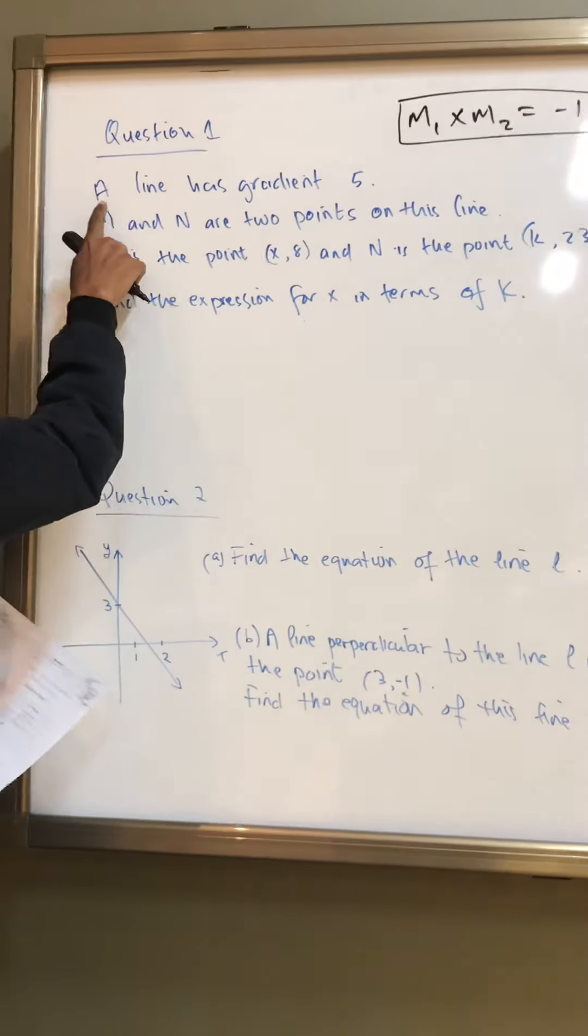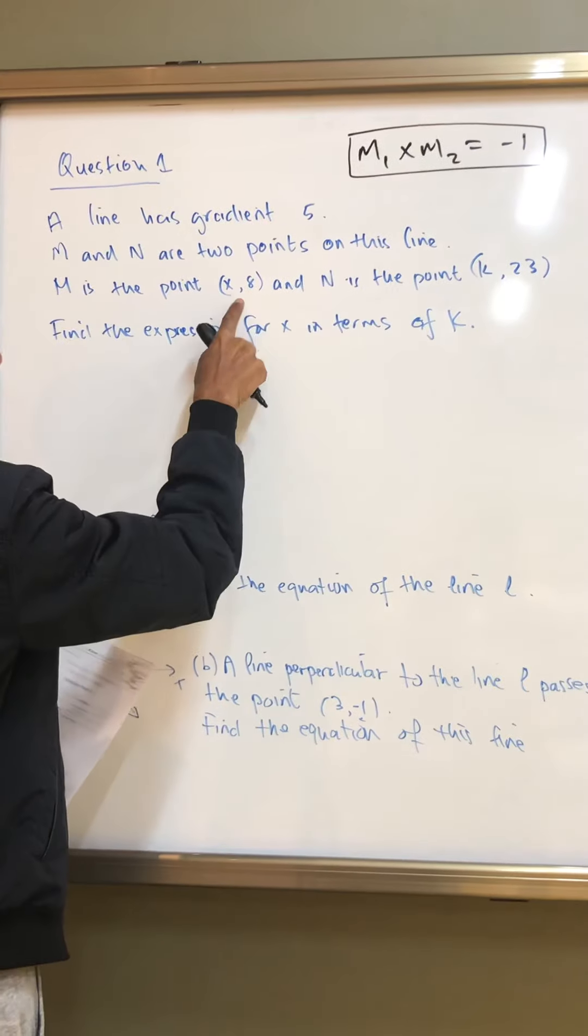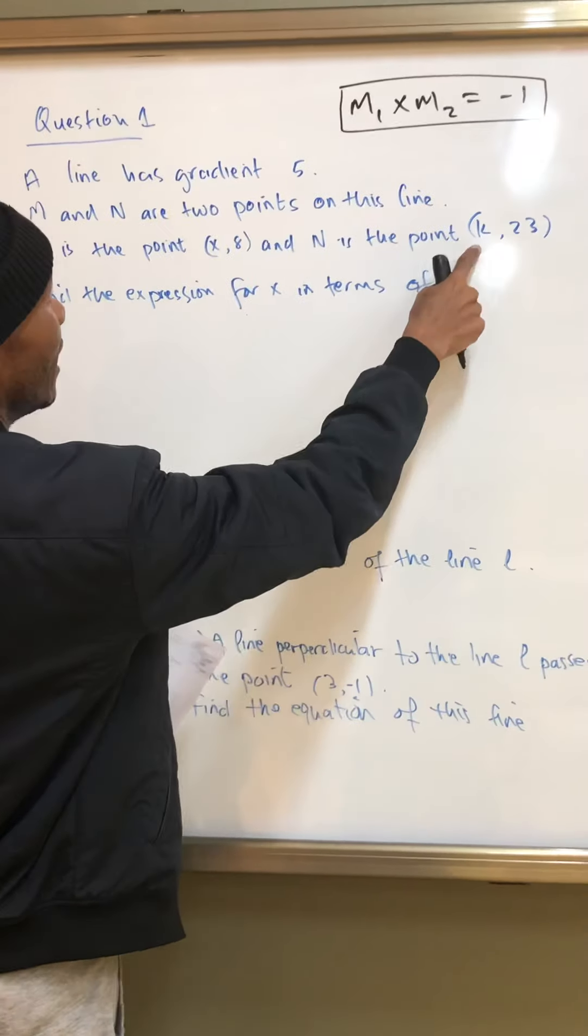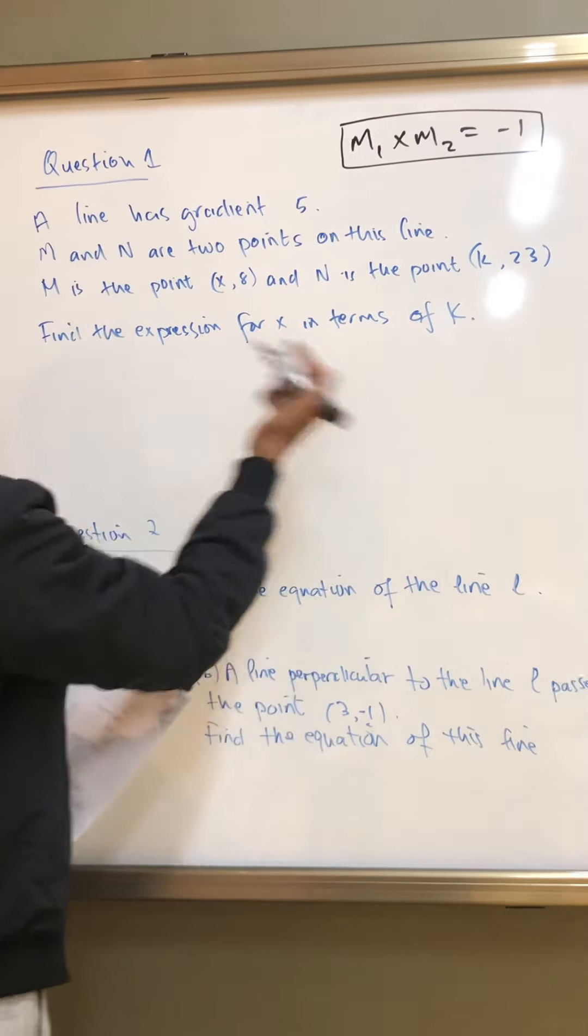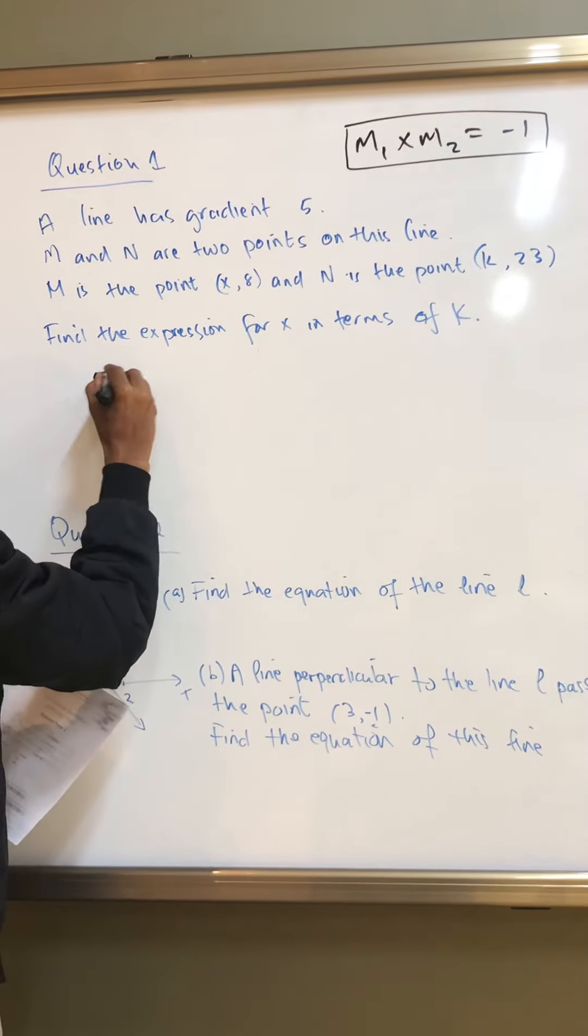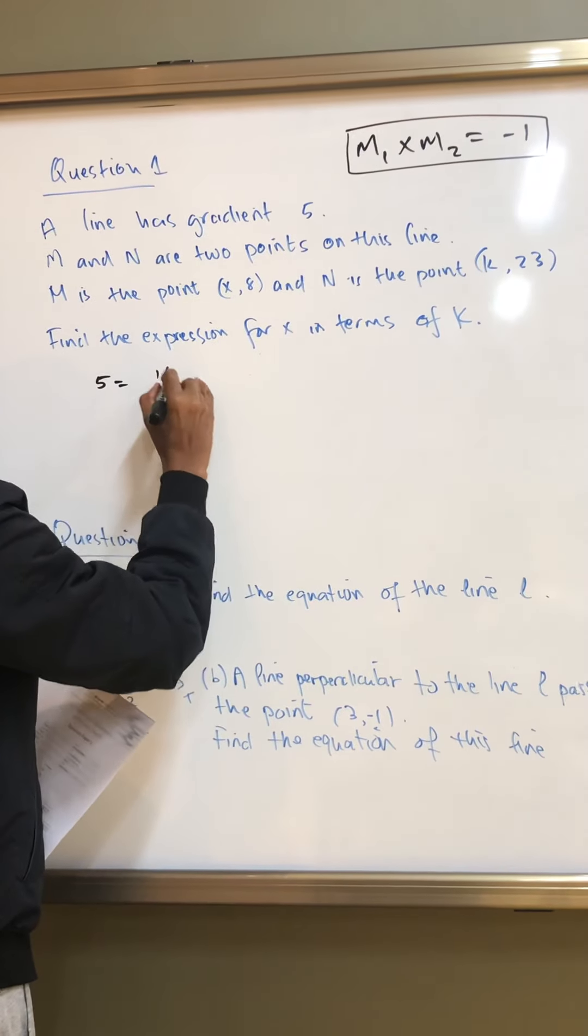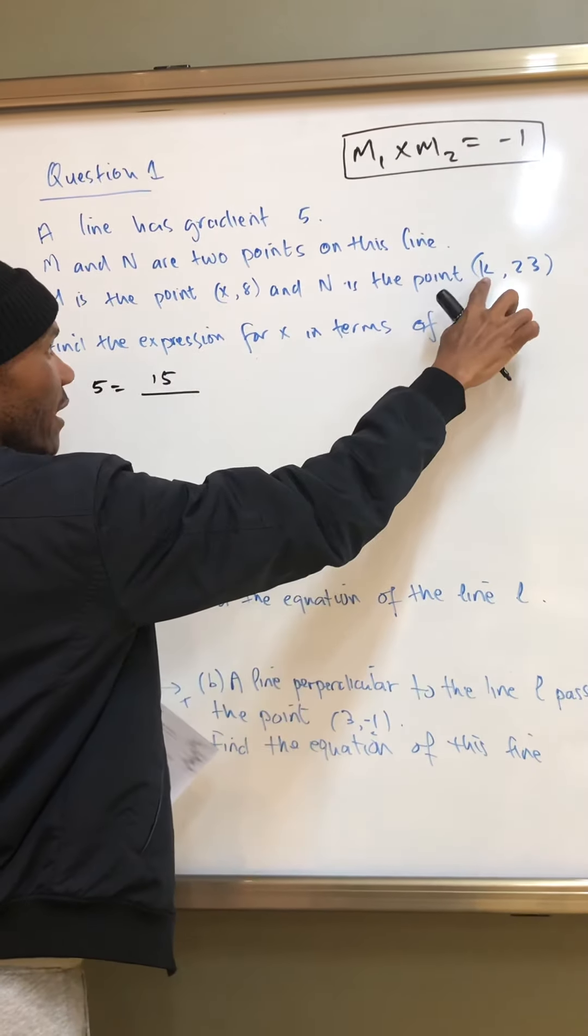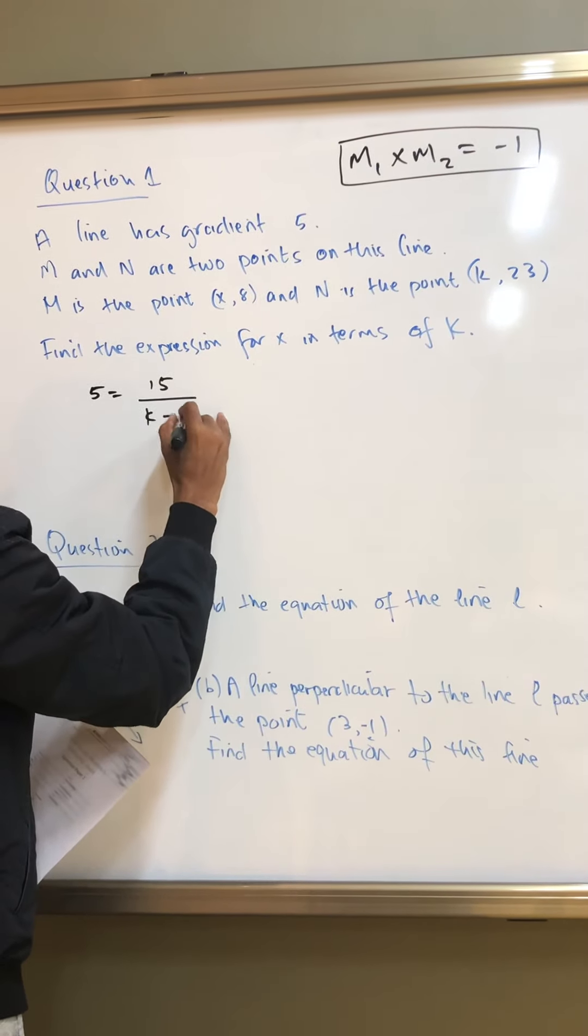So let's just look at this. It says a line has a gradient of 5 and then n at two points that is m and that is n and the gradient is 5. So how would you express this? You know that the gradient is 5, right? And 23 minus 8 is 15 and k minus x.